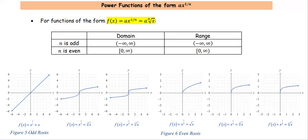For power functions of the form ax to the power 1 over n, the power 1/n is the same as the nth root of x. For n an odd number: x to the 1/1 is the first root of x, which equals x; x to the 1/3 is the cube root of x; x to the 1/5 is the fifth root of x. From the graph, the domain is the set of all real numbers, and the range is also the set of all real numbers — from negative infinity to positive infinity.